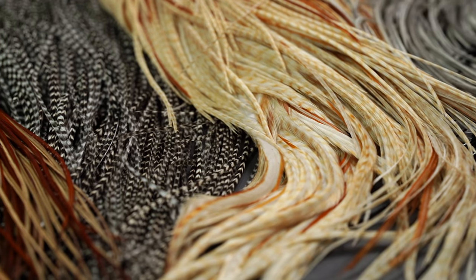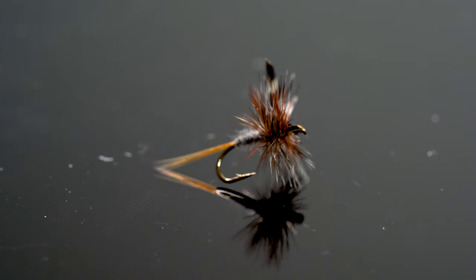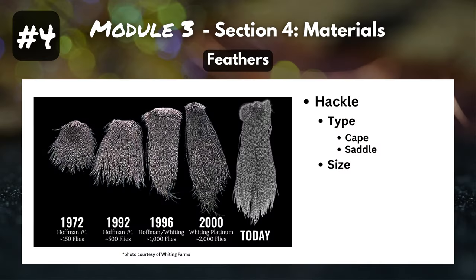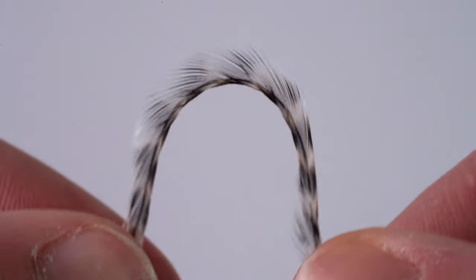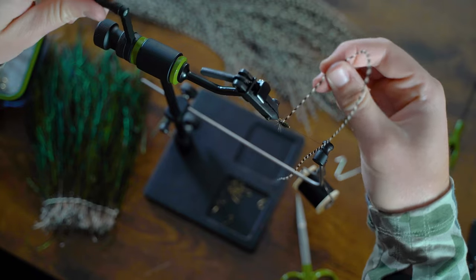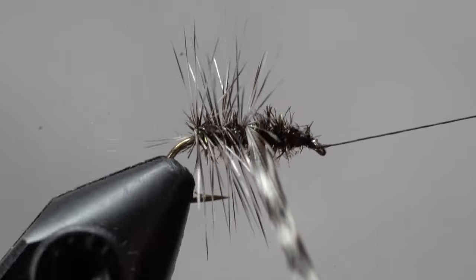If you purchase a high quality cape or saddle, that's going to have enough feathers to tie hundreds, maybe even a thousand flies. These aren't just your average everyday chicken feathers. These roosters have been selected and bred over the past 30 to 40 years specifically for fly tying. Rooster feathers have stems that are thin and pliable, and their barbules are stiff, straight, and web-free — absolutely perfect for tying dry flies.